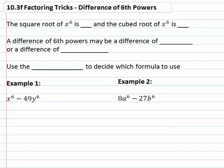In this video we're going to look at an interesting factoring trick: the difference of sixth powers. With the difference of sixth powers we have to make a decision, because the square root of x to the sixth is x cubed — square root divides the exponent by two. But we're also aware that the cubed root of x to the sixth is x squared, dividing the exponent by three. Which means a difference of sixth powers may be a difference of squares or it may be a difference of cubes.